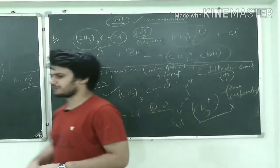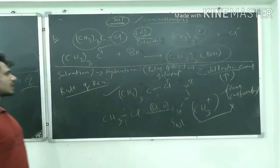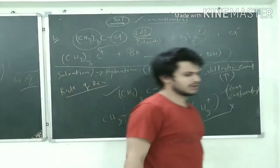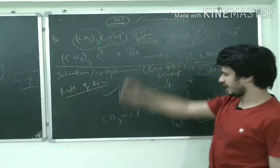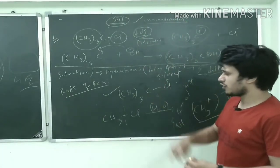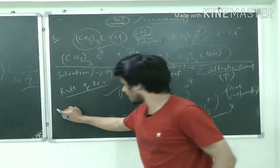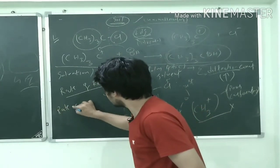And then let's take one thing here - why it is called unimolecular? Because in RDS you can see, only one thing is involved in RDS.